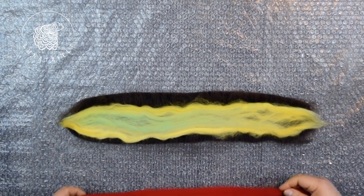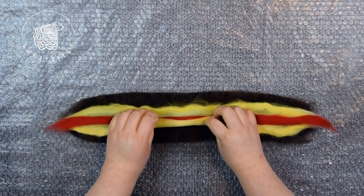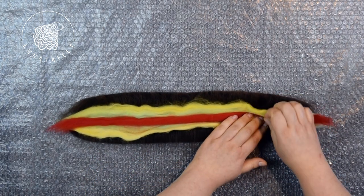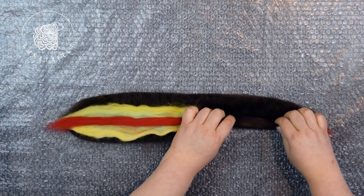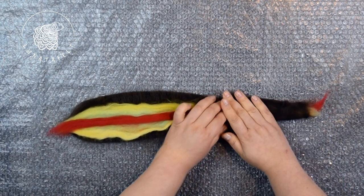Then place a small strand of wool for the center. I am using red. Place it in the center and roll it up. The red will be inside, surrounded by yellow, and the outermost layer will be dark brown wool. Now roll this neat little wool roll.